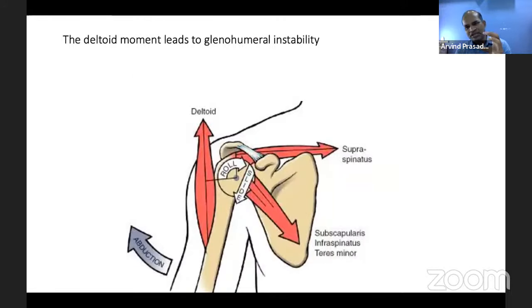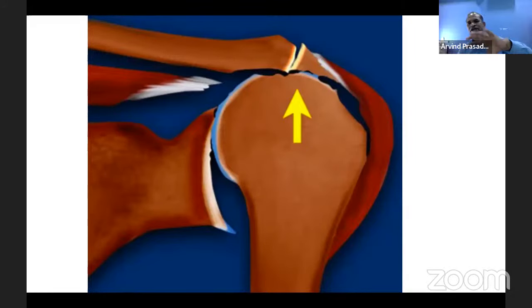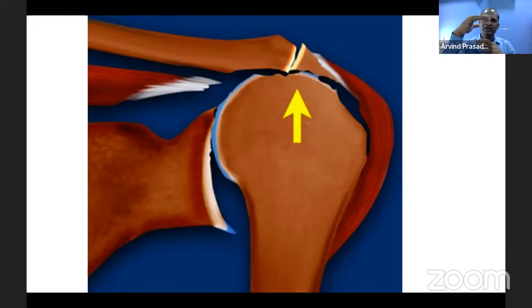The deltoid has its fulcrum superiorly, so during abduction the humeral head tends to go up, creating instability. The supraspinatus counteracts this by keeping the head in the glenoid. Once the supraspinatus is torn, the humeral head keeps migrating superiorly, rubbing against the undersurface of the acromion as well as the glenoid surface. This leads to glenohumeral arthritis and acromihumeral arthritis — because there is no cuff between the humeral head and the acromion — resulting in rotator cuff arthropathy.